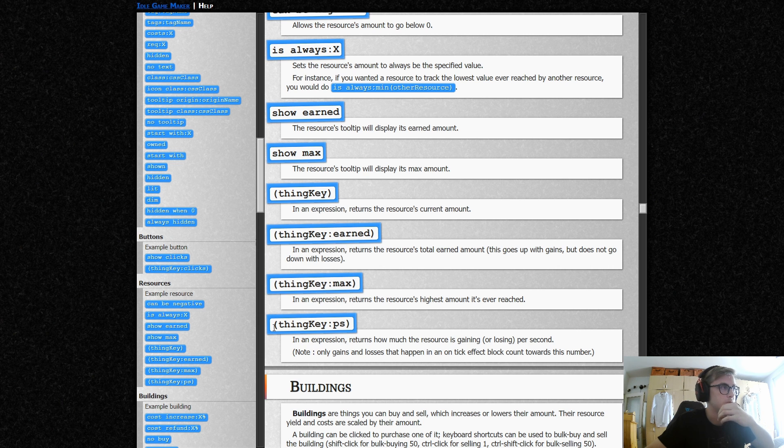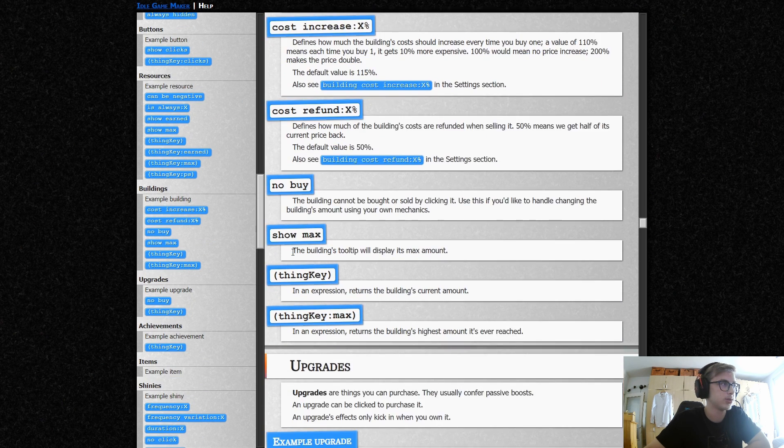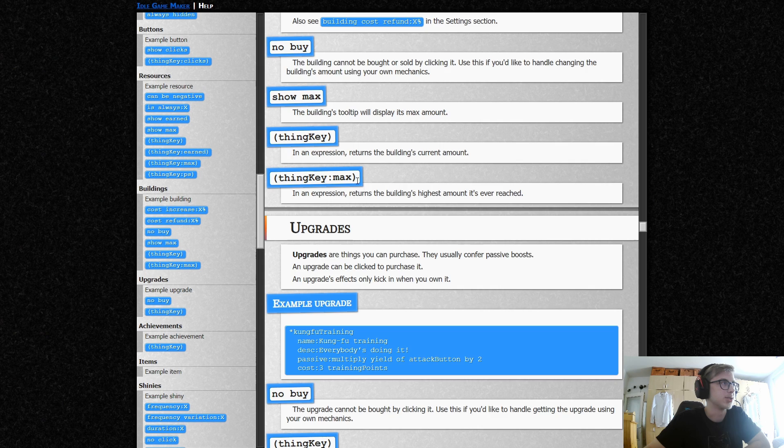Production speed. This is actually pretty useful, because you can use this to show production info in a buildings description. And here we can see buildings, no buy, show max, thinky max.